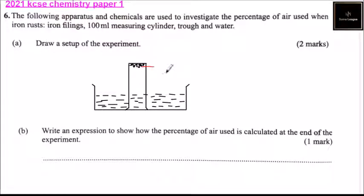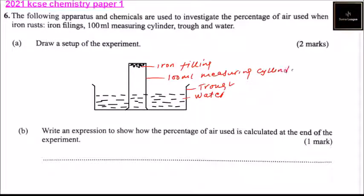So you can label this. You can say this is iron filings, this is water, this is trough, this is a 100 ml measuring cylinder. So that will be the setup of the experiment. And by drawing that, you should be able to get two marks.